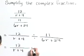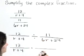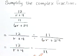So let's write this as 12 over r plus 4 times, now that 11 is going to go down to the denominator.